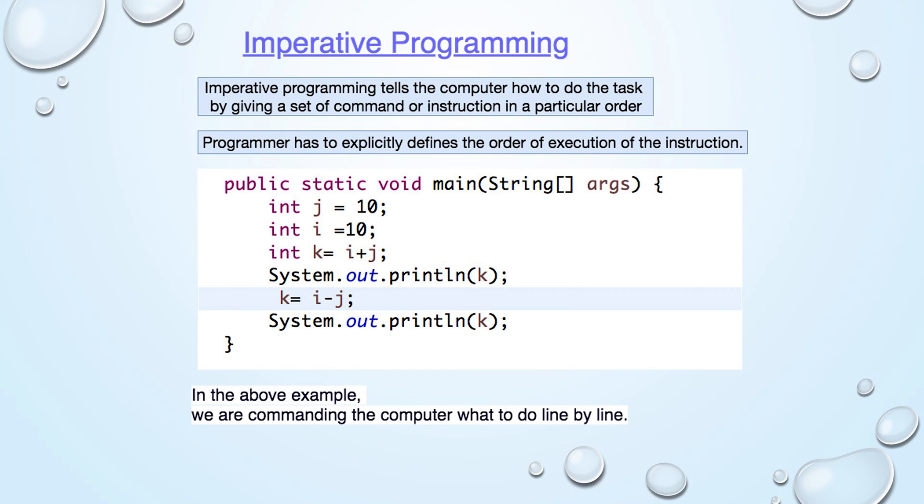The order of instructions is significant in imperative programming. In this example, we are commanding the computer what to do line by line.